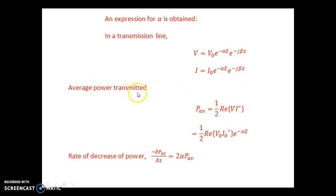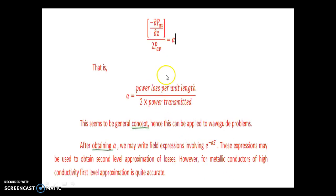Average power transmitted P average is equal to 1 by 2 real part of V I conjugate is equal to 1 by 2 real part of V0 I0 into e power minus 2 alpha z. Rate of decrease of power is minus dP average divided by dz is equal to 2 alpha P average.